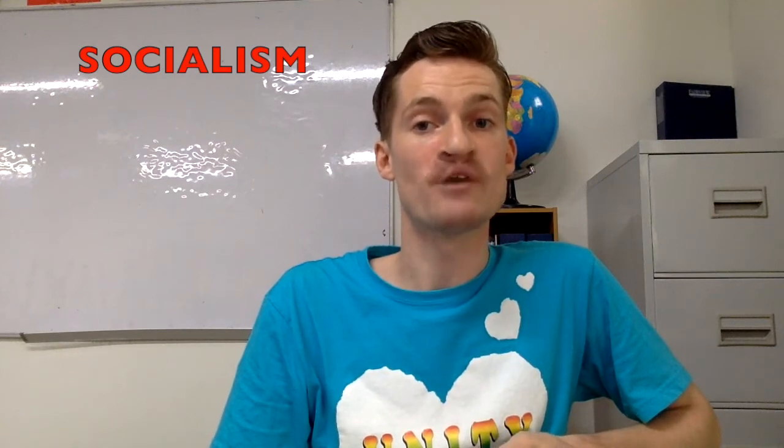Socialism was a political, economical and social theory which came about in the 19th century. Socialists believed that in order to create a more just and fair society, the state or government should control all land, property and wealth, and that the government would be responsible for redistributing that wealth equally amongst its population. Socialism came about due to the harsh conditions which the lower classes faced in the workhouses and places of employment during the Industrial Revolution.